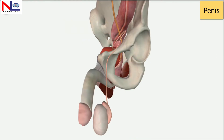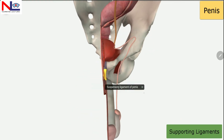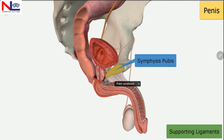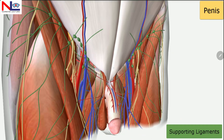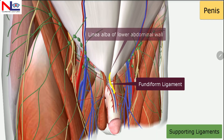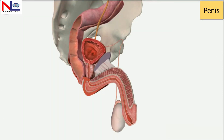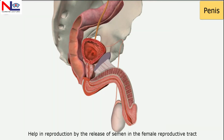There are two supporting ligaments of the penis. The suspensory ligament arises from the symphysis pubis. Superior to the suspensory ligament is the fundiform ligament, which arises from the inferior part of the linea alba of the lower abdominal wall. These structures help in reproduction by facilitating the release of semen into the female reproductive tract.